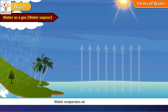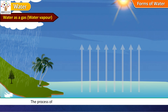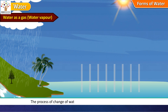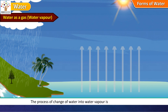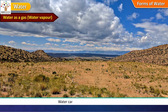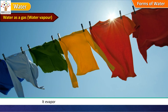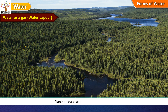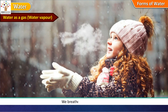Water evaporates with the help of heat. The process of change of water into water vapor is called evaporation. Water can evaporate from the soil. It evaporates from wet clothes hanging on a clothesline. Plants release water vapor into the air. We breathe out water vapor.